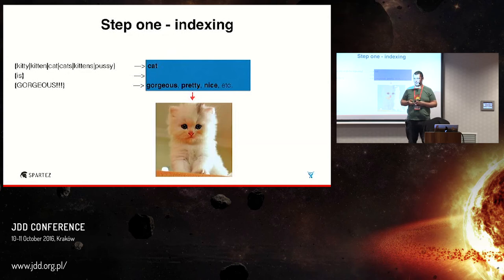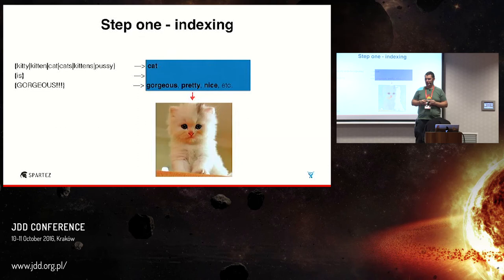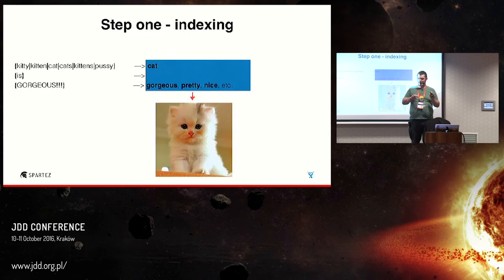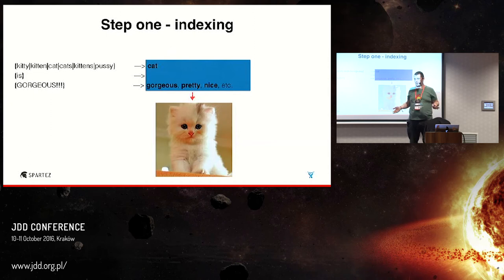So how does indexing work? We have a document that describes a kitty - a kitten, cat, maybe some cats. The kitty is gorgeous. That is the subtitle of the document. Lucene can change all those words indexed - for example, kitty, cats, and so on - to a single word: 'cat.' This is called synonym filtering, basically a process of using dictionary data to get the base form of a word. It works not only for synonyms but also for different word forms.